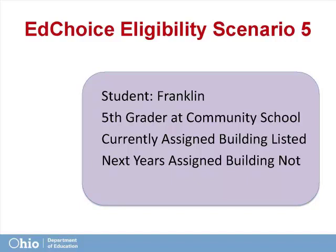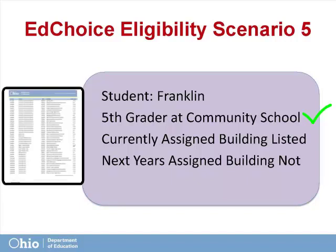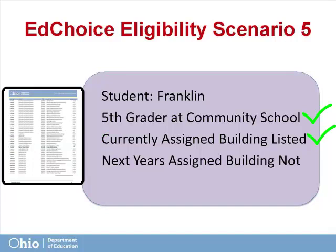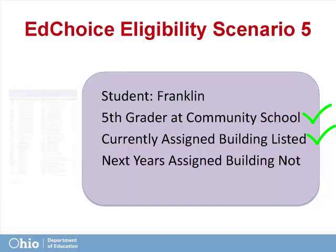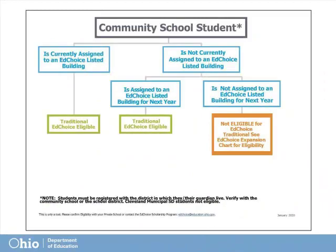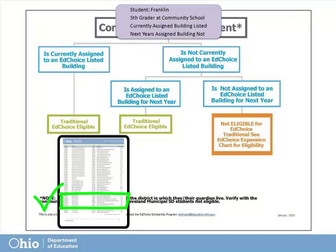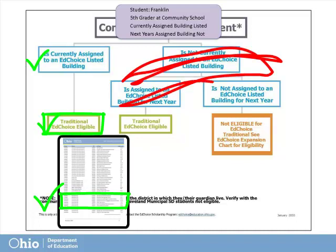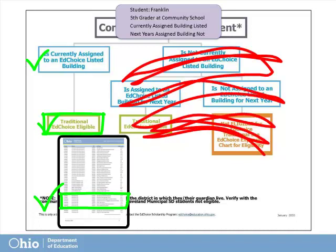Our next example is Franklin, a 5th grader living in Taft Local School District who attends a community school. The school he would be assigned to attend for 5th grade in Taft Local is an eligible school building, but the school he is assigned to for 6th grade is not. Is Franklin eligible? We must find the EdChoice Community School student chart. Once we verify that he would have been assigned to an EdChoice eligible building this year, we can be confident that he is traditional EdChoice eligible. Where he would attend next year doesn't matter.